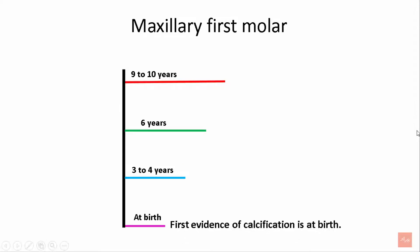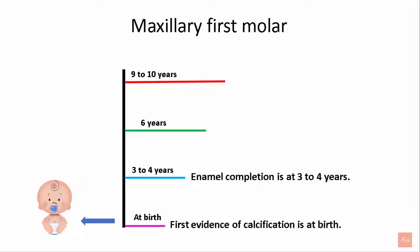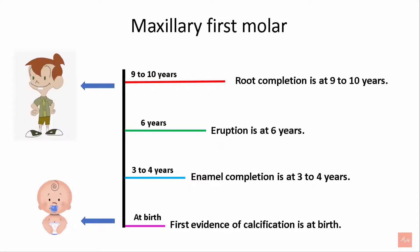The first evidence of calcification of the maxillary first molar is at birth. Enamel completion happens at 3–4 years, eruption is at 6 years, and root completion is at 9–10 years.